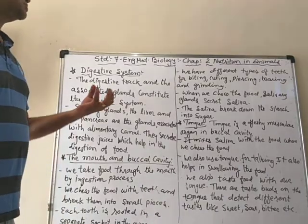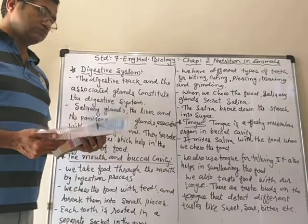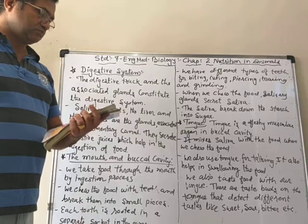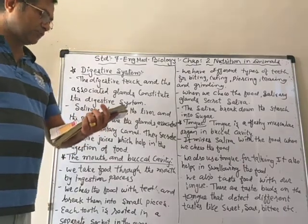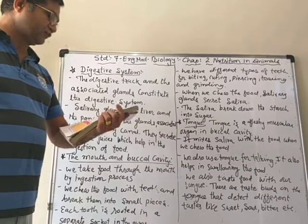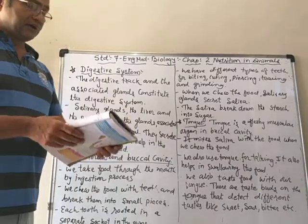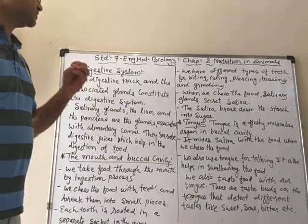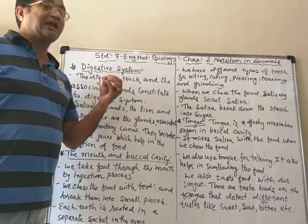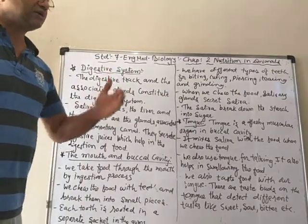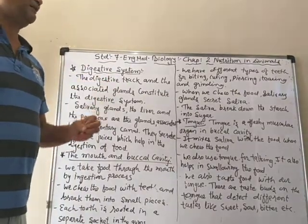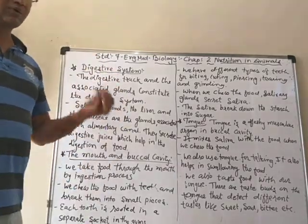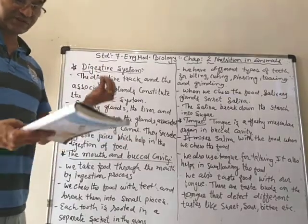In the last video we learned about nutrition — what is digestion, ingestion, mode of ingestion, mode of intake of the food, etc. We also learned about the digestive tract which is known as the alimentary canal, and the different parts of that alimentary canal like the buccal cavity, esophagus, stomach, small intestine, large intestine, etc.